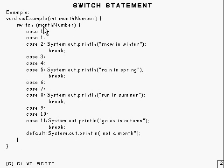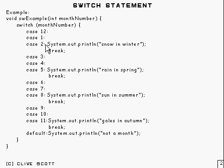In a more general case, you've got an expression in here, and this is evaluated. Based on the value of that expression, you choose one of these special types of labels — called switch labels — to jump to, and that's where you continue. Everything between there and there is basically a block which contains a lot of statements, some of which are labelled with switch labels.